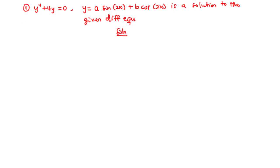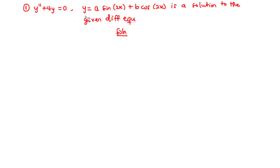To solve this problem, we have y'' + 4y = 0 and we are given y. We will find the second derivative of y with respect to x, then substitute that plus 4 times y into the equation and check if the left-hand side equals the right-hand side. If they are the same, the function is a solution; if not, it is not a solution.